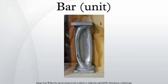The bar is a metric unit of pressure, defined by the IUPAC as exactly equal to 100,000 pascals. It is about equal to the atmospheric pressure on Earth at sea level, and since 1982 the IUPAC has recommended that the standard for atmospheric pressure should be harmonized to 100,000 pascals, equal to 1 bar, or 750.0616827 torr. The same definition is used in the compressor and pneumatic tool industries.